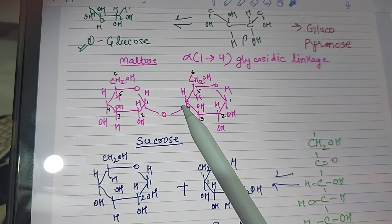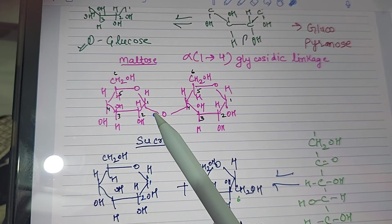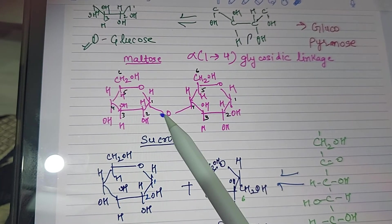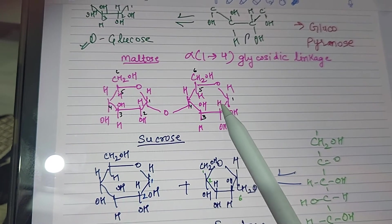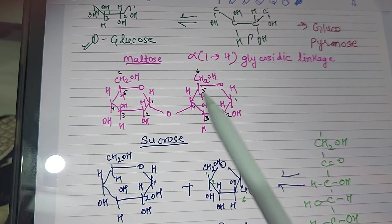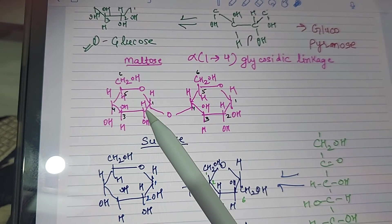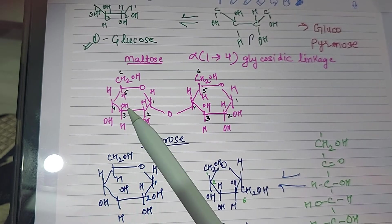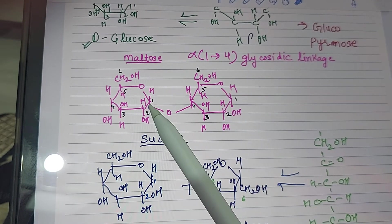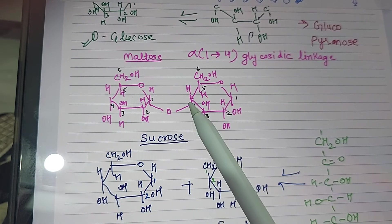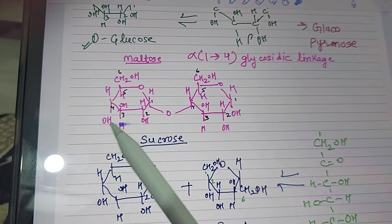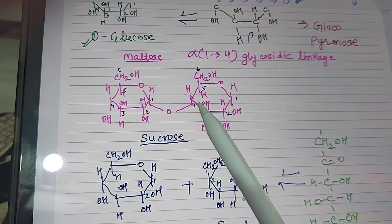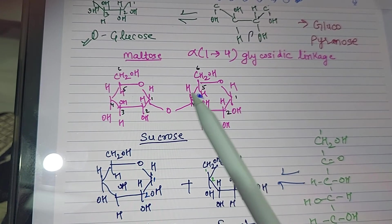Whenever we combine two monomers, we have to remove a water molecule (H2O). Since both OH groups are present at the bottom, this linkage is called alpha-1,4. The numbering indicates carbon number one of one glucose combining with carbon number four of the other glucose.